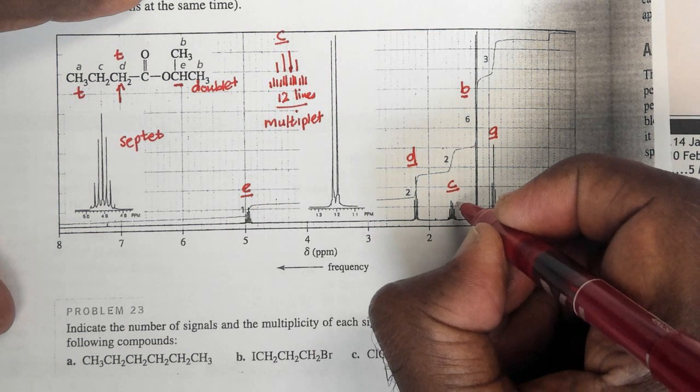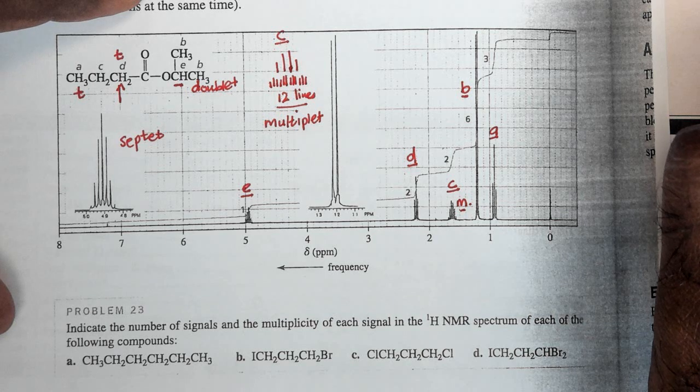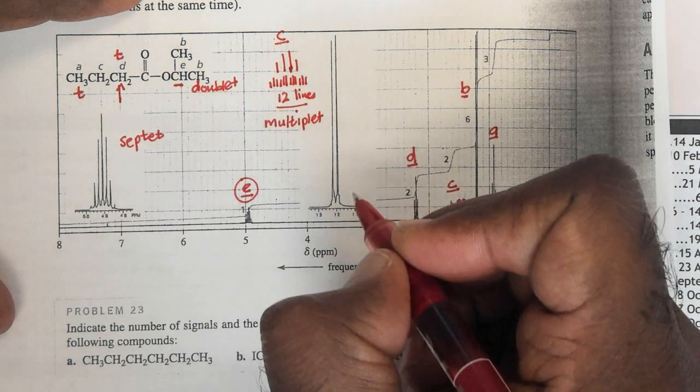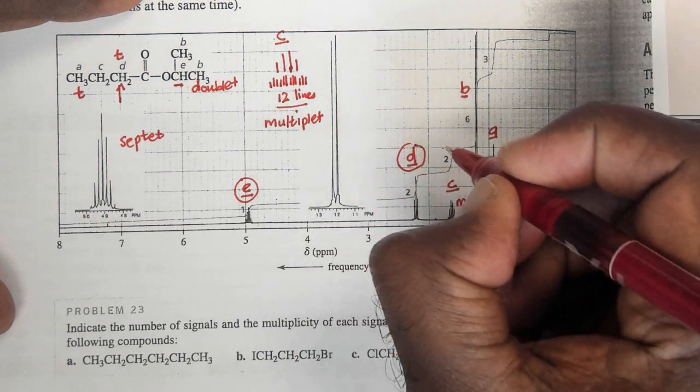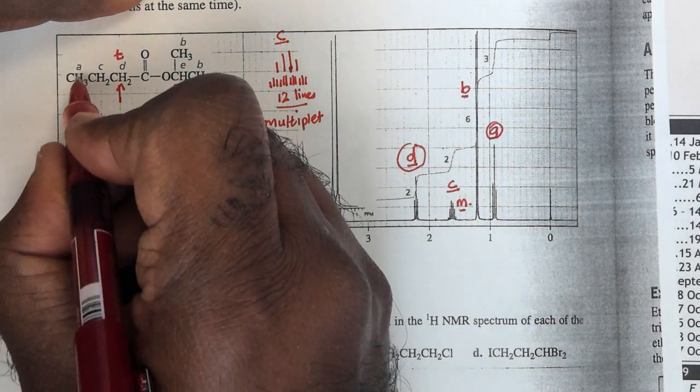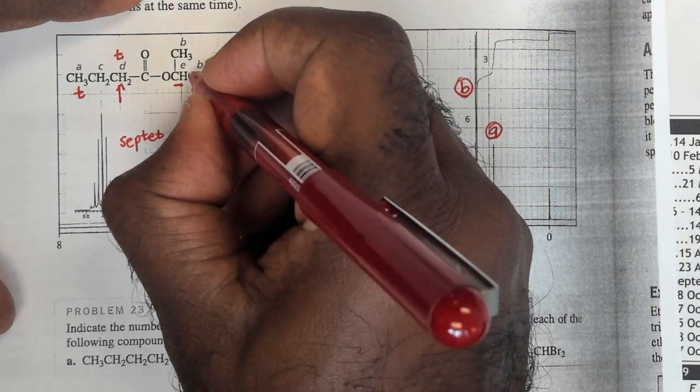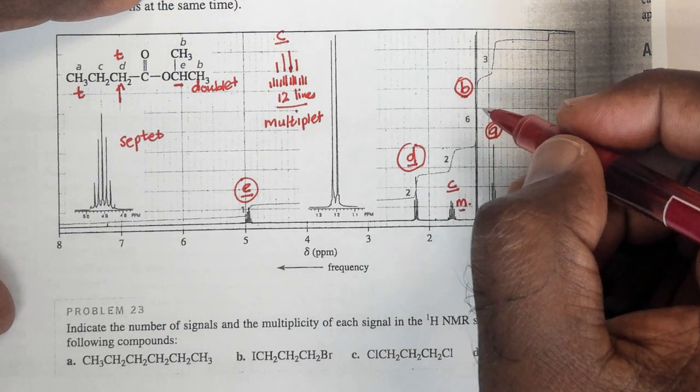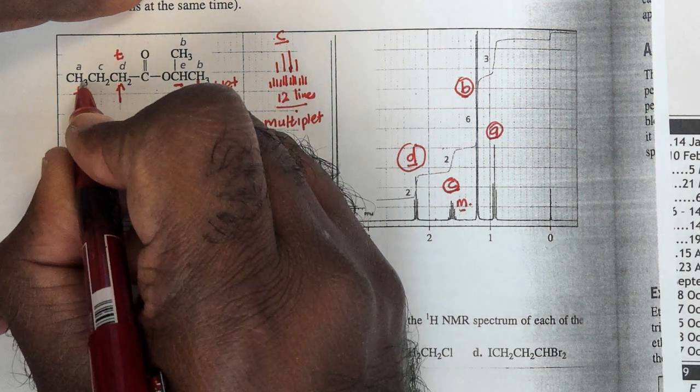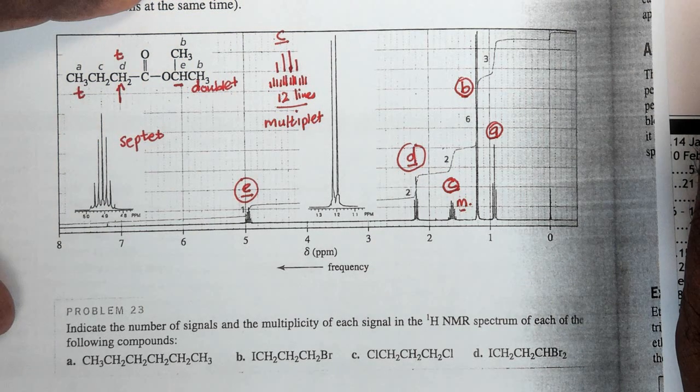So here we have a multiplet. Right, so we've assigned the spectrum. E is that CH group. D is this triplet. A is this triplet. B is the doublet because next to the CH group. And your C is a multiplet next to two different groups, one with three protons and one with two protons.